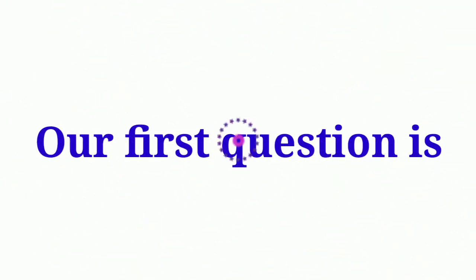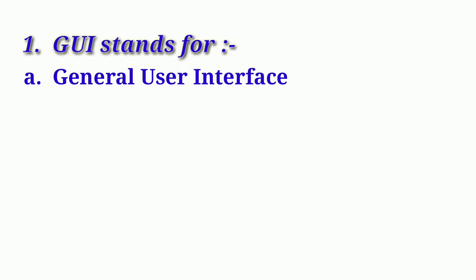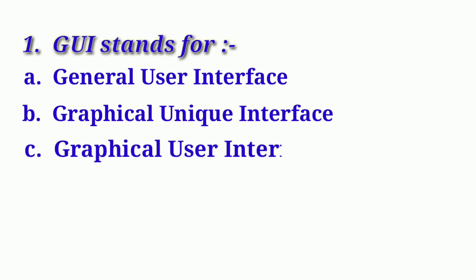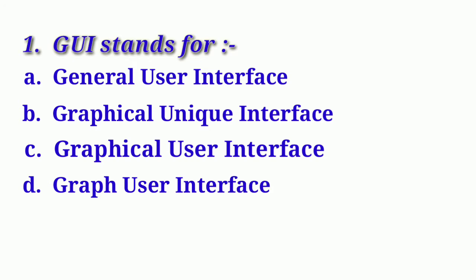Our first question is: GUI stands for. Option A: General User Interface. Option B: Graphical Unique Interface. Option C: Graphical User Interface. And Option D: Graph Use Interface.